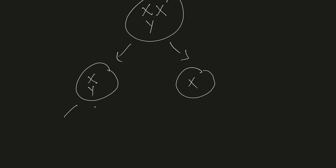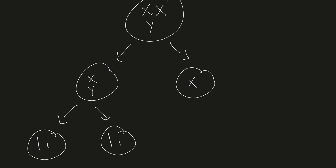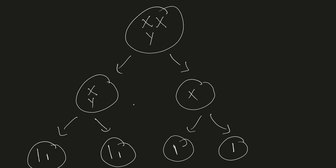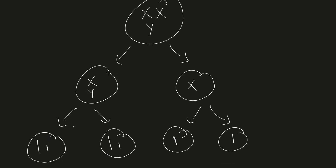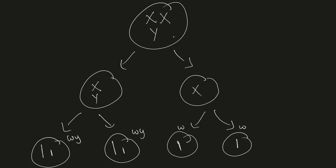In normal meiosis (regular disjunction), the X chromosomes go to one cell and the Y chromosome goes to the other in meiosis 1. These then split again in meiosis 2. This gives you gametes: W with Y (genotype W,Y), W with Y again, and W alone on the other side. So the possible gametes from normal disjunction are W,Y and W.